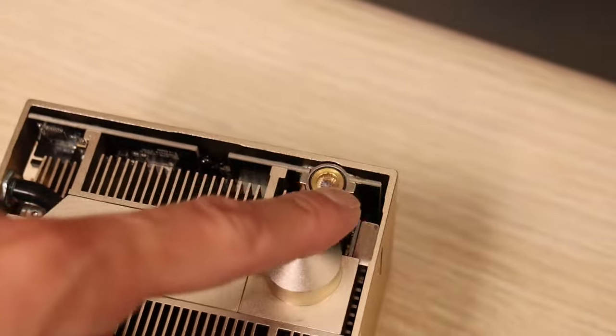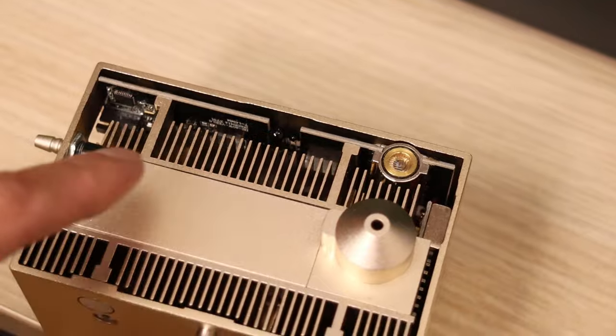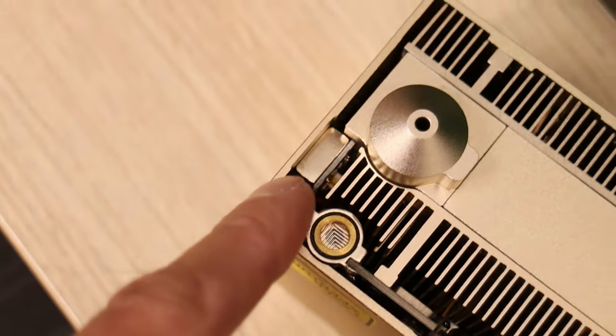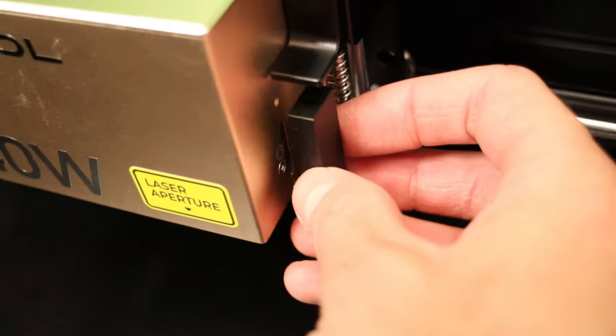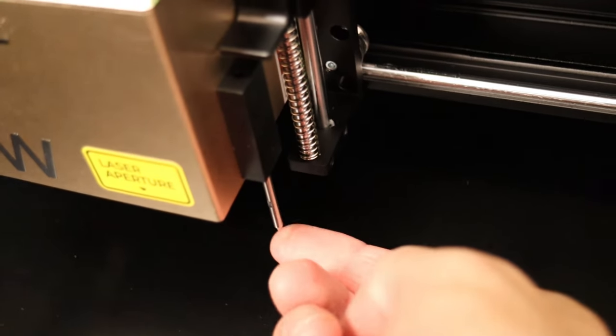The laser module features a red crosshair positioner and something that looks like a flame sensor. It also has an air assist port. The biggest new feature is the new focusing sensor. You will see how it works later in the video. Spoiler alert, it is awesome!